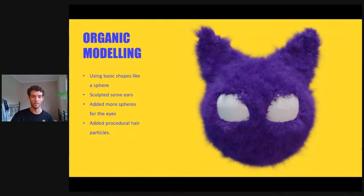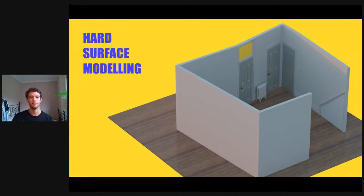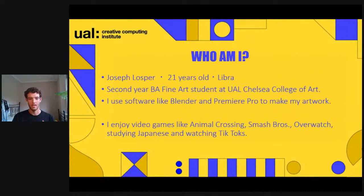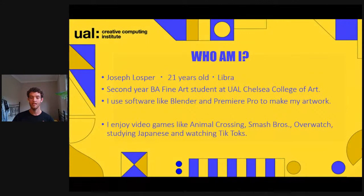I personally use Blender to create things like organic modeling — modeling something that resembles a living organism. Everything in Blender follows the same principle: you use very basic shapes and build them up until you create what you're looking for. For this example I started with a sphere for the head, used sculpt tools for ears, added spheres for eyeballs, then added a procedural hair particle texture. I also do hard surface modeling — creating objects with hard surfaces like sculptures and architectural models.